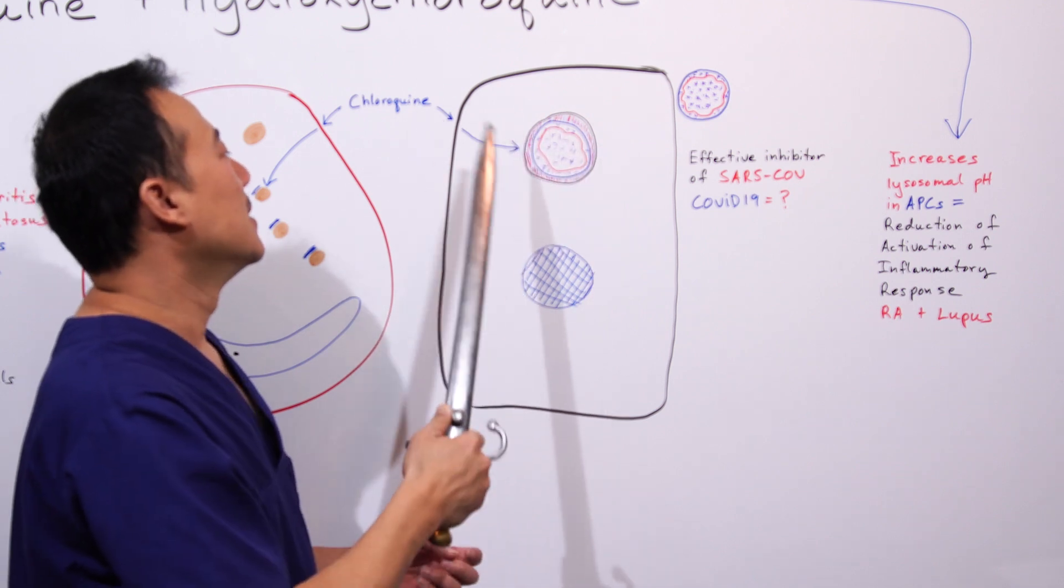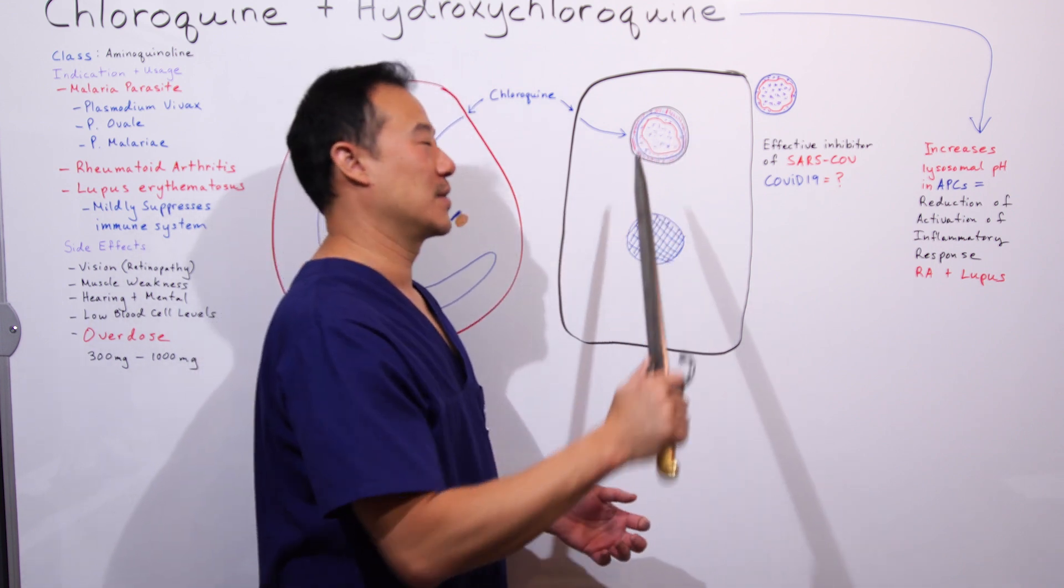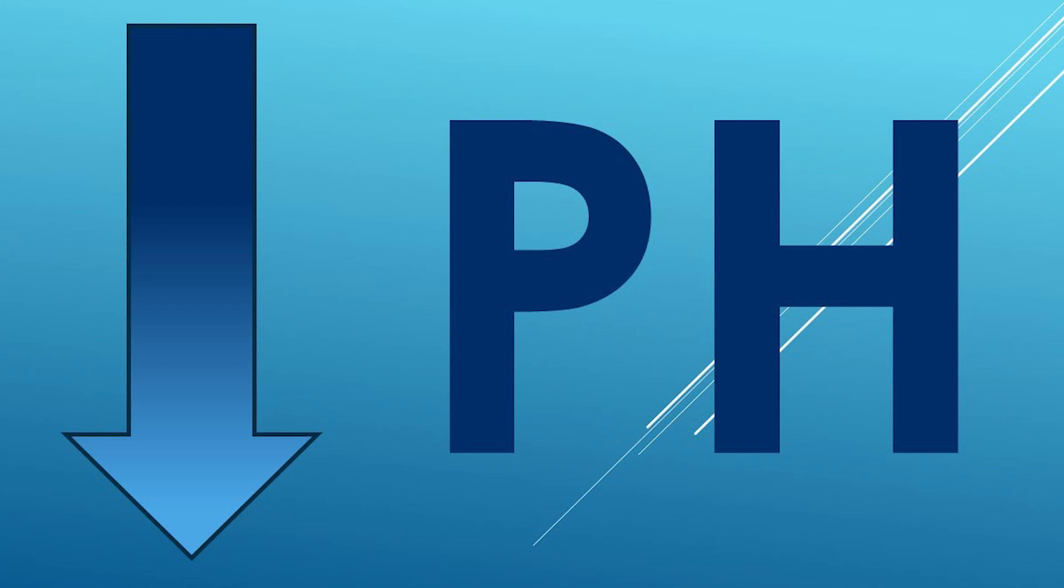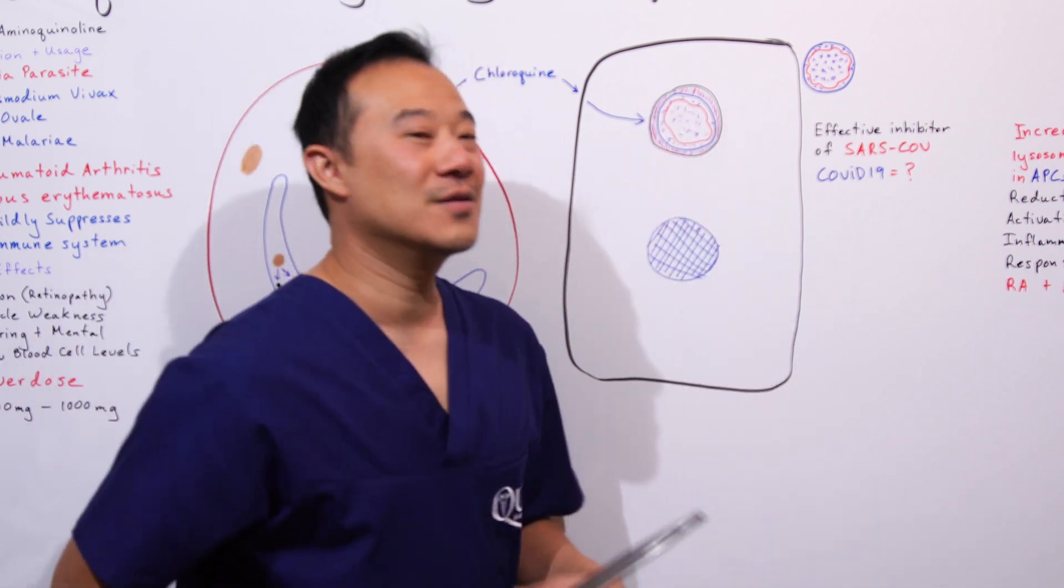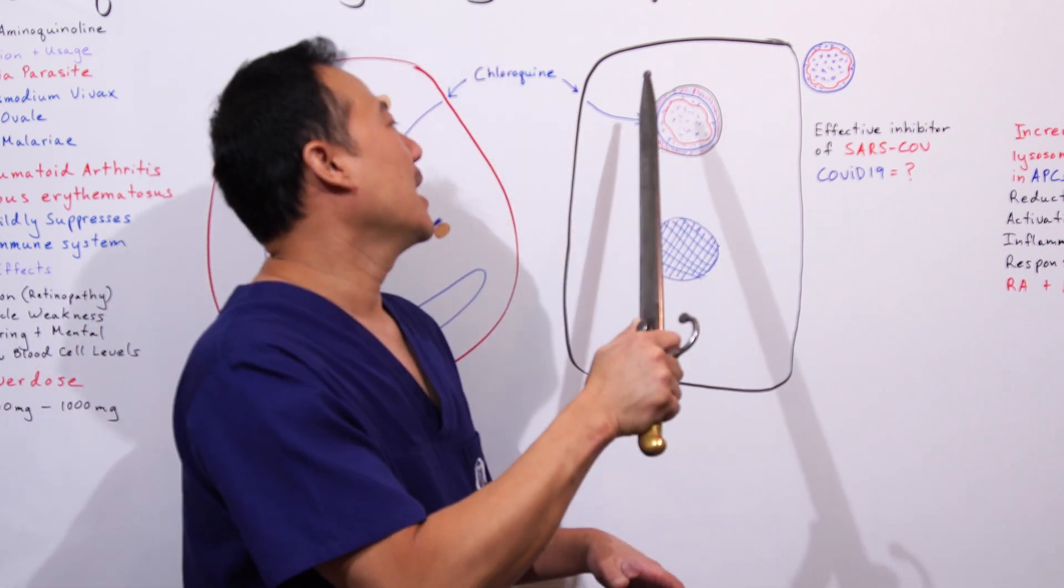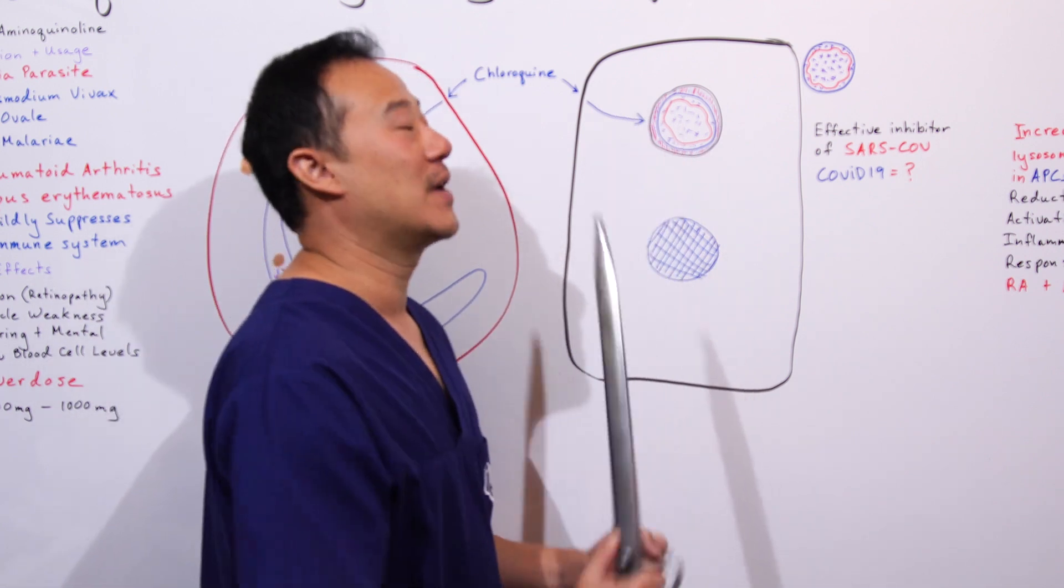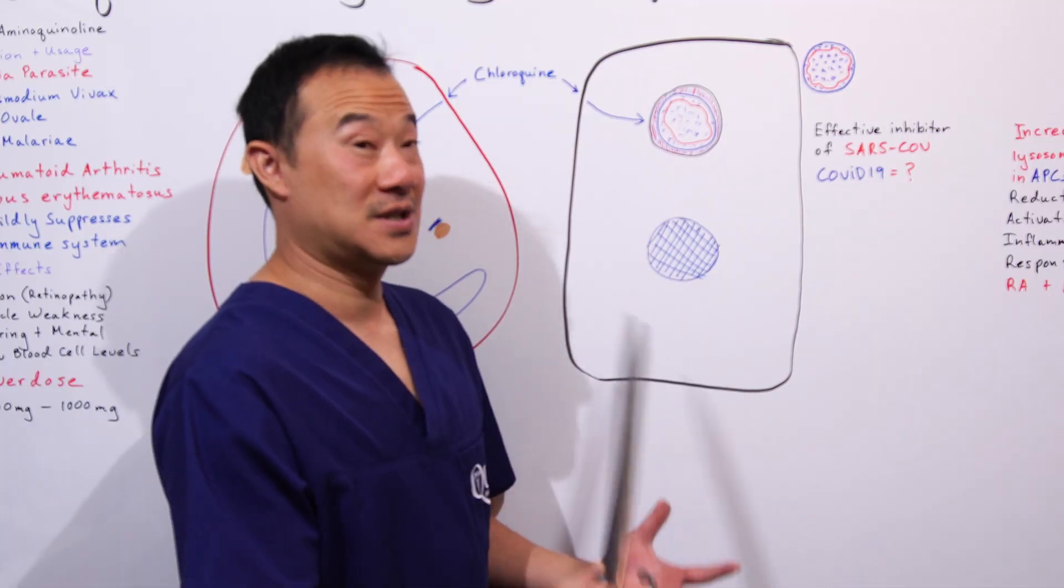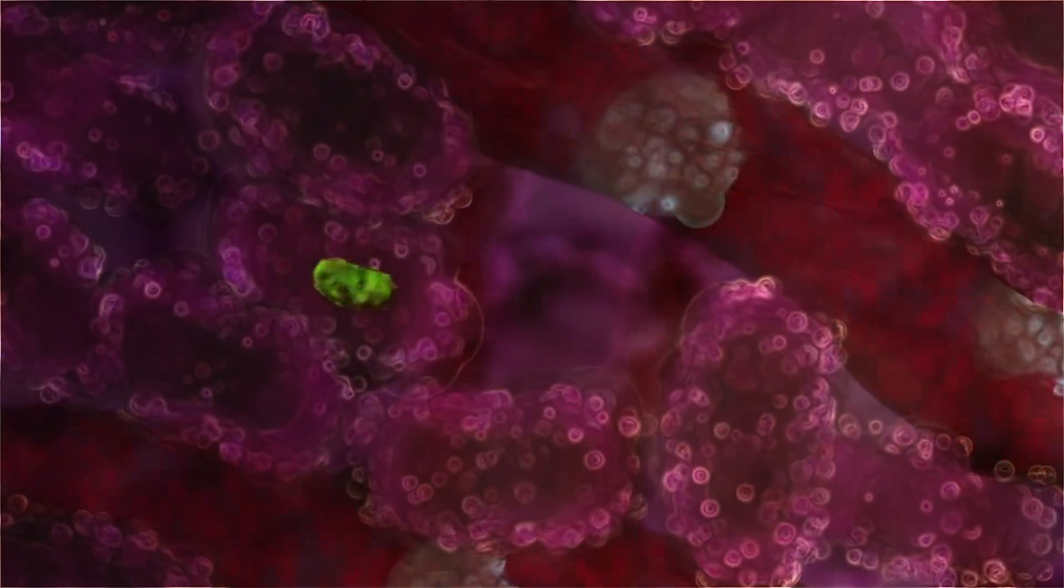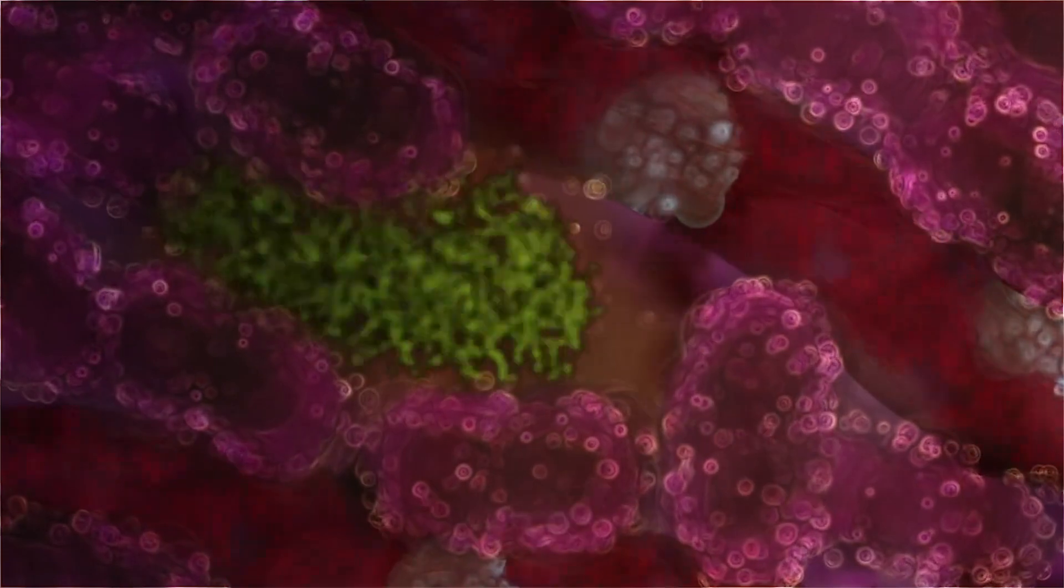Now inside the endosome—this is an endosome with the virus inside it—it's usually low pH, very acidic. That's why it's in red. You see a bit of blue in there. Here's why: because chloroquine comes in and prevents this endosome from releasing the virus content into the host cell and causing the host to replicate the virus.